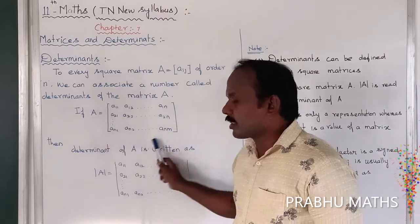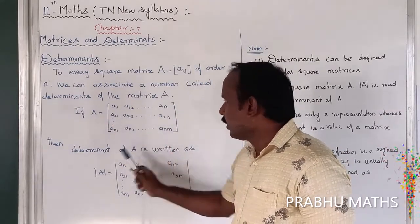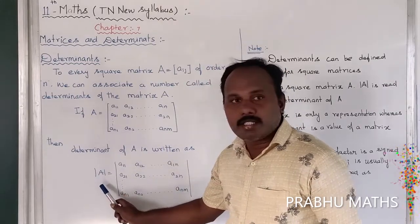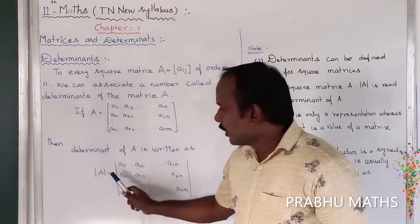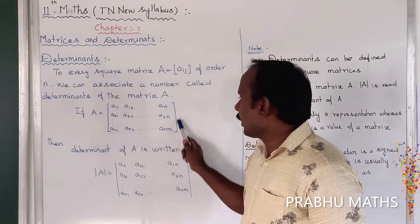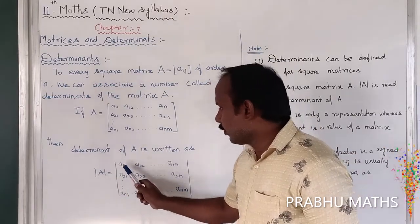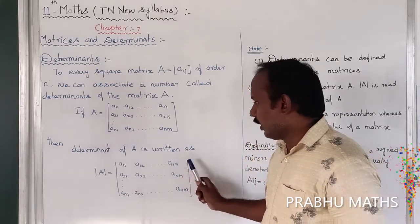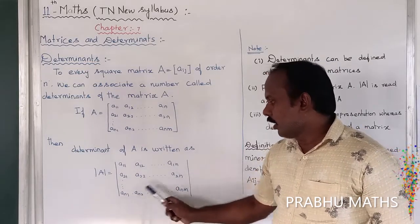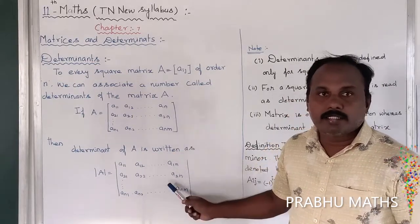So if we have a matrix — this is a fully written matrix, the simplest matrix — then the determinant of A is written using a modulus-style notation. This is not a modulus; this is the determinant of A. It is denoted with square brackets and equals A11, A12, and so on up to A1n; A21, A22, and so on up to A2n; continuing down to Anm.